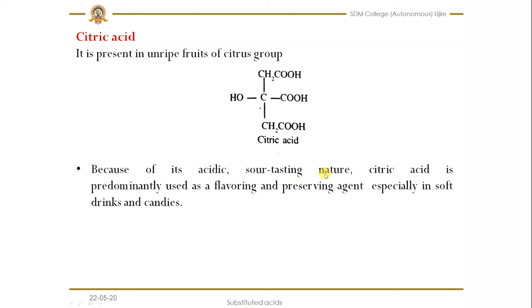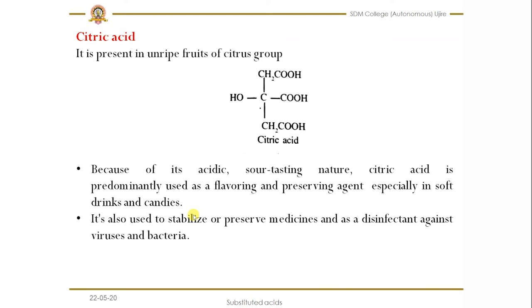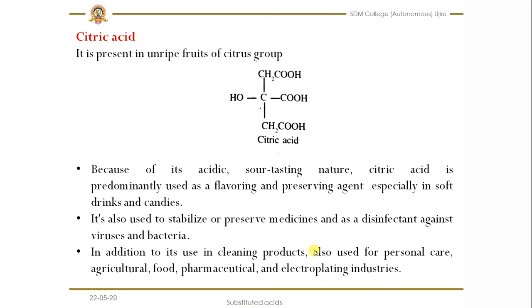Since it is acidic, citric acid has a sour-tasting nature. It is predominantly used as a flavoring as well as a preserving agent, especially in soft drinks and candies. It is also used to stabilize or preserve medicines, and to disinfect against viruses or bacteria. In addition, it is used in cleaning products, personal care, agriculture, food and pharmaceutical industries, and electroplating industries — it has the highest range of applications.